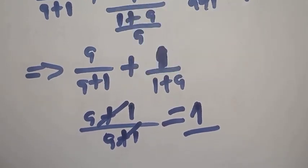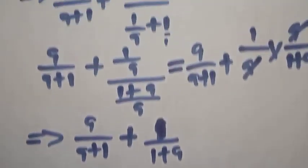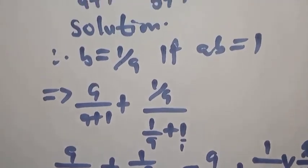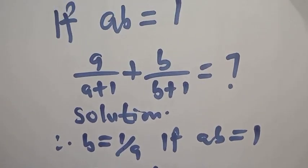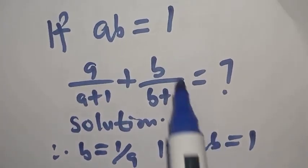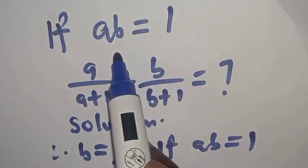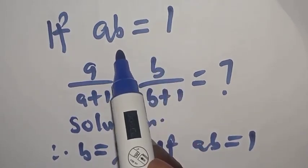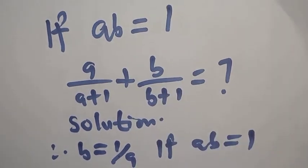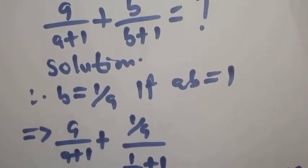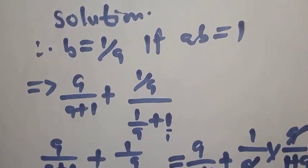You can also do the same thing for B. From our original question, AB is equal to 1. If you make A the subject of formula, then A will be 1 over B. You substitute and also get 1. Our final answer is 1.